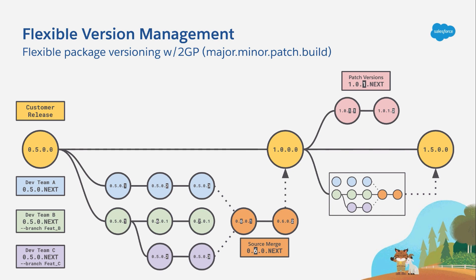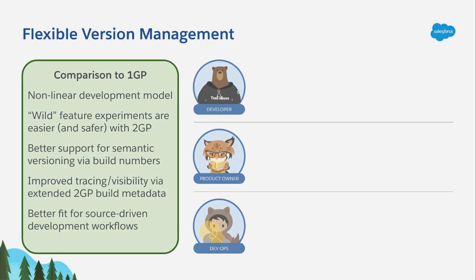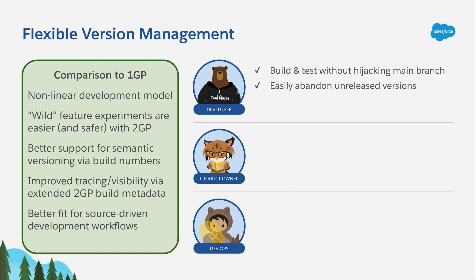So that's flexible version management. Now let's look at why developers, product owners, and DevOps folks should love it. For developers, flexible version management makes it really easy to build and test a variety of features without hijacking the main product branch. That means it's simple to just abandon entire branches of code that don't work and move forward with what does — because useful changes get merged using source control and then you just point that to the right ancestor. No special orgs or org tools needed.